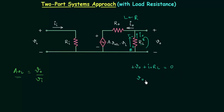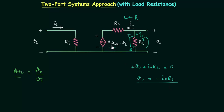Now subtracting Io·RL from both sides, this gives us output voltage Vo equal to minus Io·RL. So we have the output voltage, and if we can calculate the output current Io we will have the output voltage in terms of no-load voltage gain, the input voltage, and the resistances. So let's try to calculate the current Io, the output current.